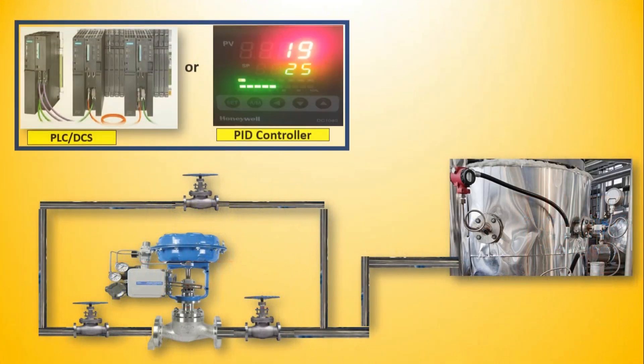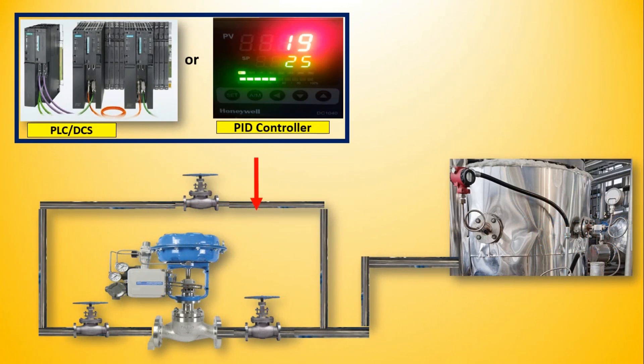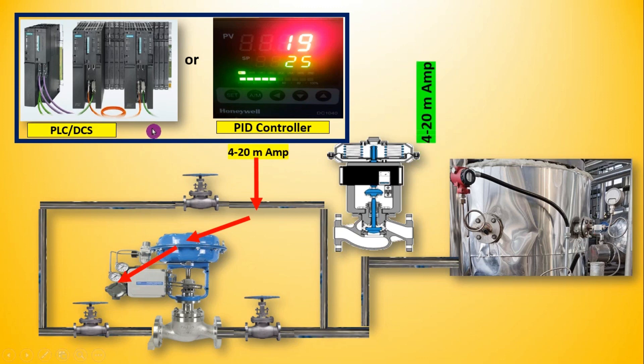Here you can understand the instrumentation control system in a more easy way. The main aim of using a controller is to maintain the parameter on a certain value. This certain value is known as set point for the process.